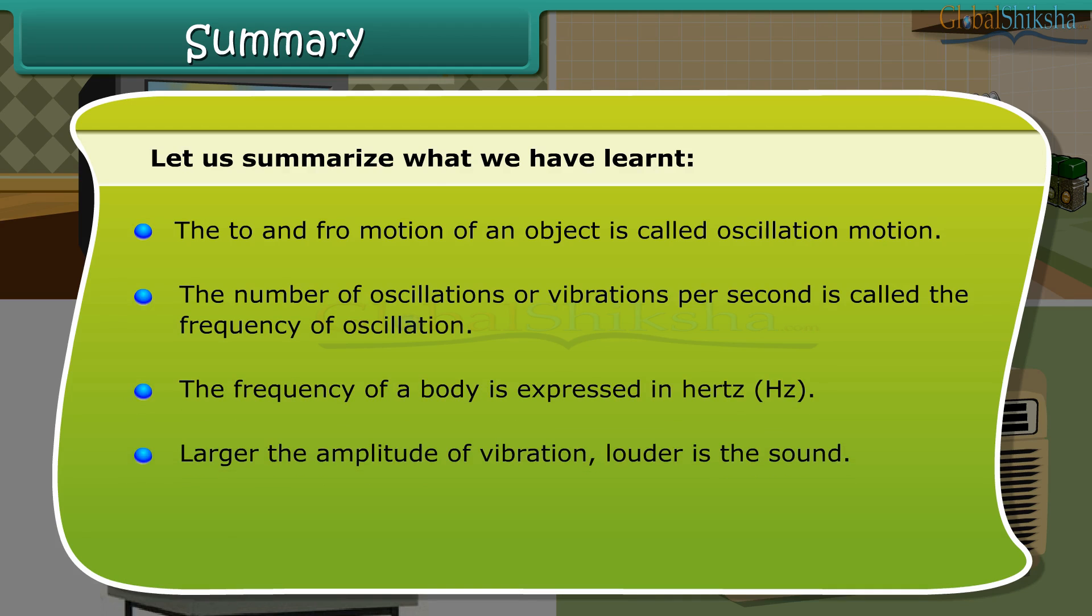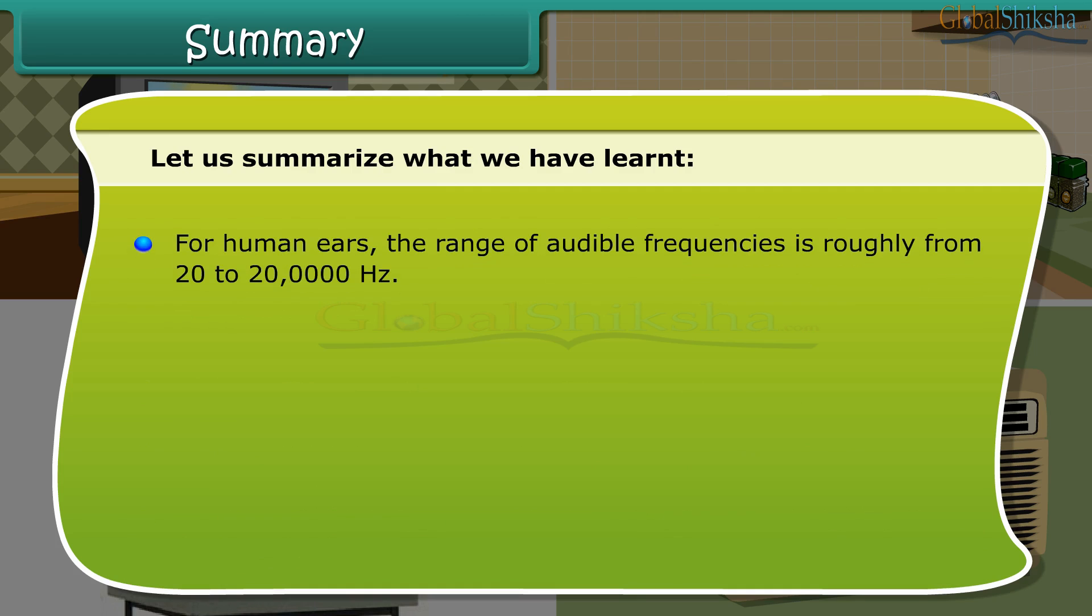Larger the amplitude of vibration, louder is the sound. Higher the frequency of vibration, the higher is the pitch or shrill is the sound. For human ears, the range of audible frequencies is roughly from 20 to 20,000 hertz. The presence of excessive or unwanted sound in the atmosphere is called noise pollution.